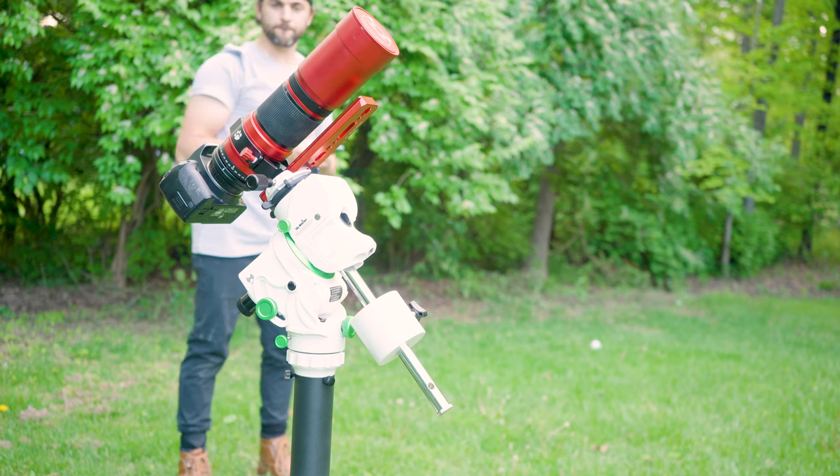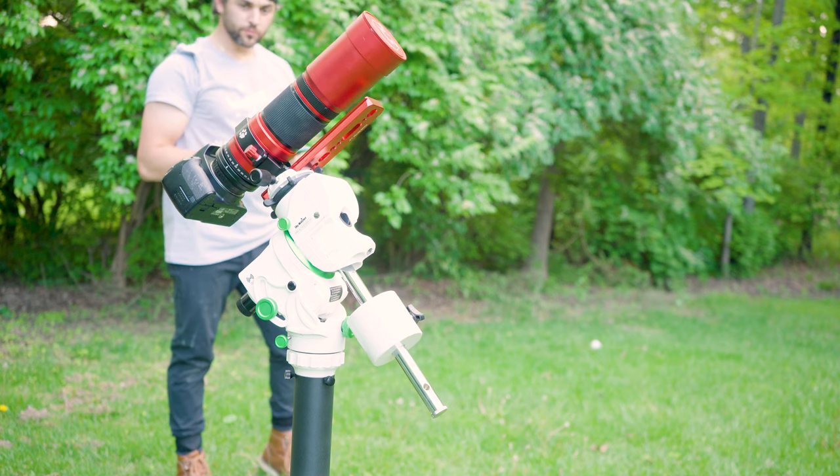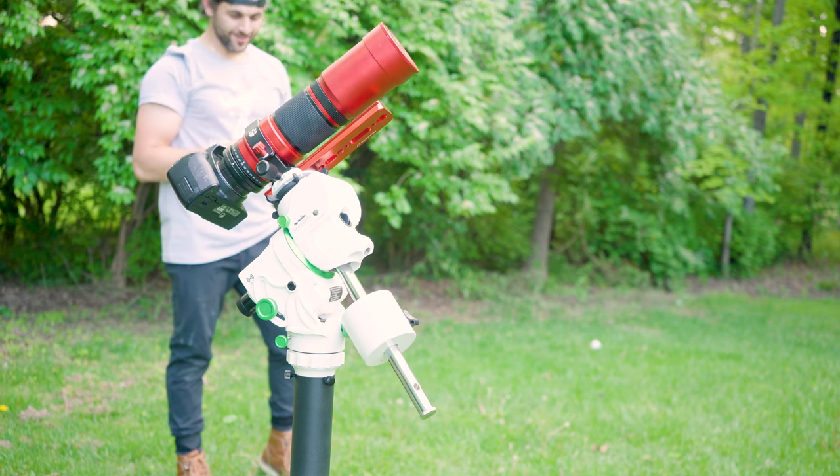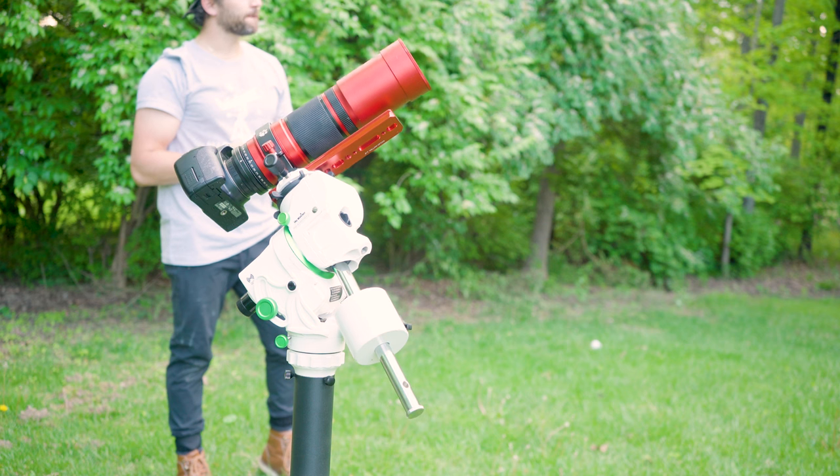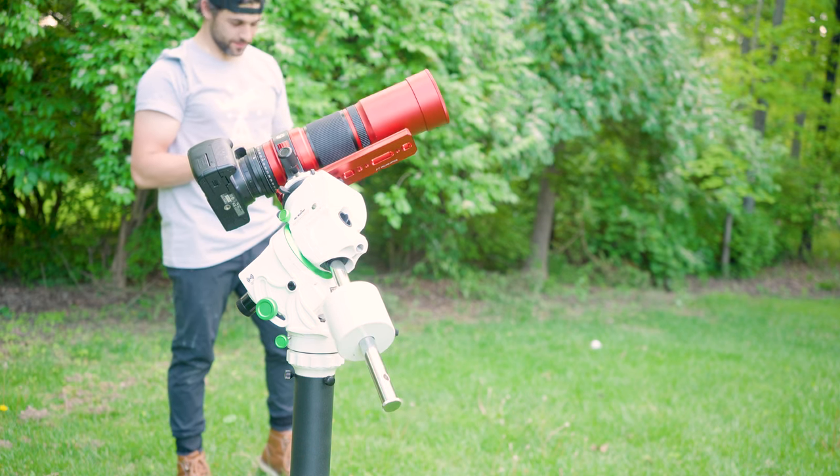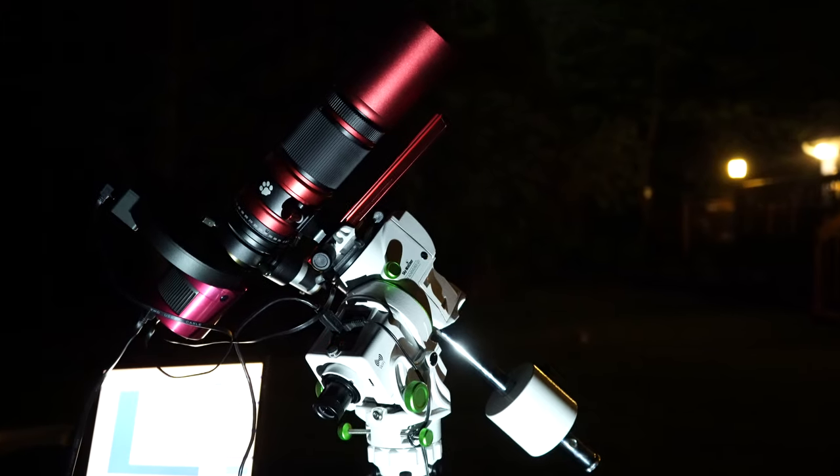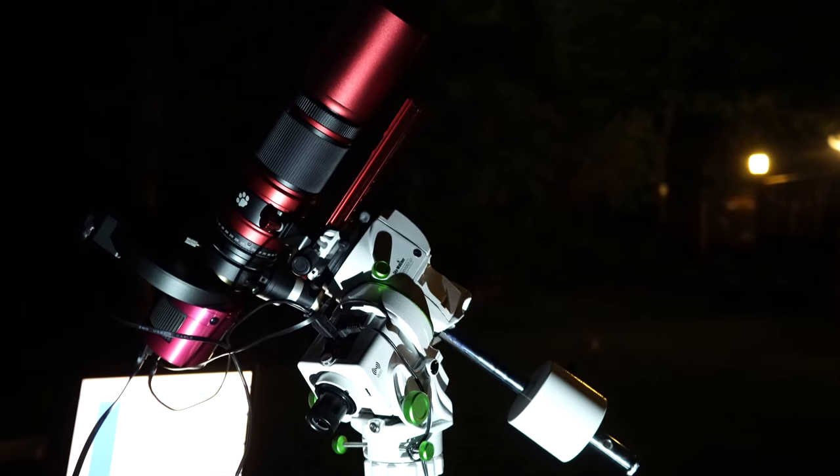So given the test results, if you have the Skywatcher GTI and you have a short focal length doublet or a triplet refractor or a longer focal length lens, anywhere up to about 450 millimeters, you may be able to expect results like this. Now the mounts vary, polar alignment conditions, everything varies from astrophotographer to set up to set up. But if you have something like the William Optic Xenostar doublets or something within that short focal length range, this may be a perfect option for some portable astrophotography.